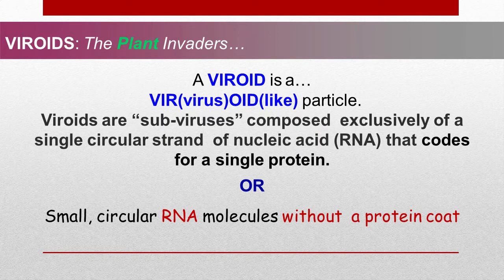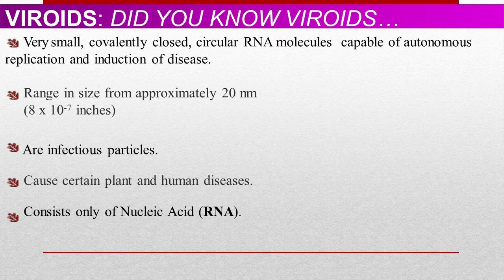A viroid is a virus-like particle. Viroids are subviruses composed exclusively of a single circular strand of nucleic acid or RNA, that codes for a single protein, or small circular RNA molecules without a protein code. Viroids are very small, covalently closed circular RNA molecules capable of autonomous replication and induction of diseases, ranging in size from approximately 20 nanometres. They are infectious particles and cause certain plant and human diseases.